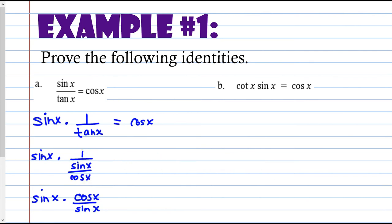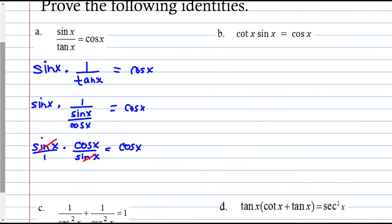Back to the expression: sine x times cosine x over sine x. The sine terms cancel each other out — cross-simplifying — and I'm left with just cosine. And that's exactly what we were trying to get: cosine of x on both sides. Identity proven.